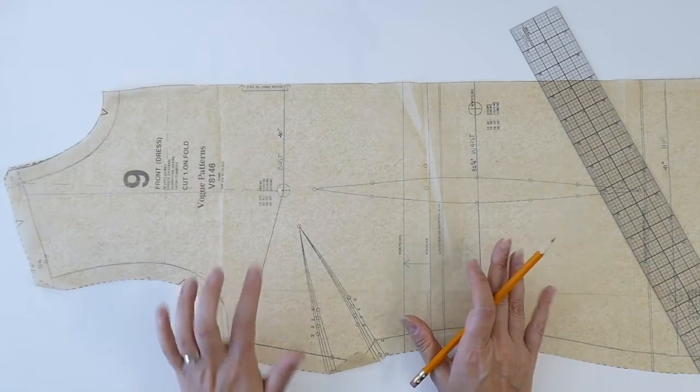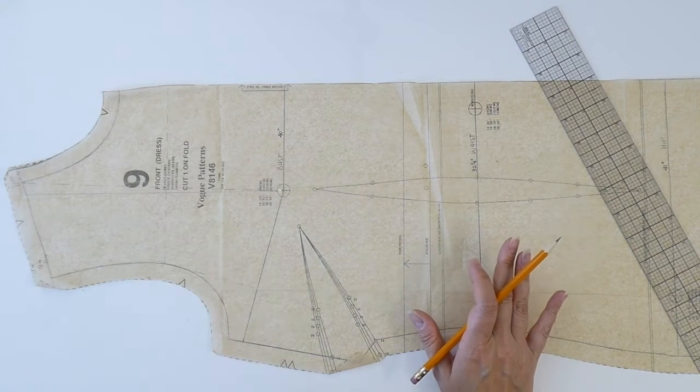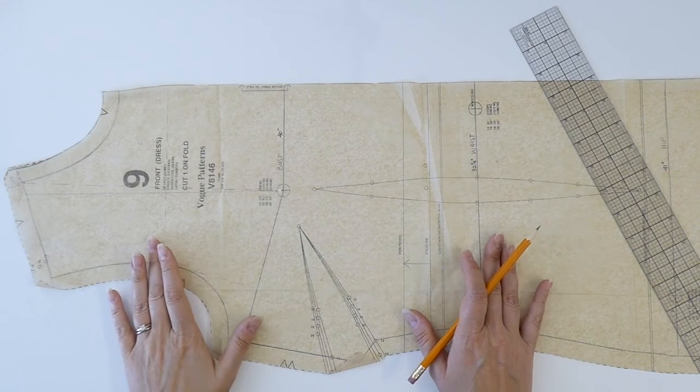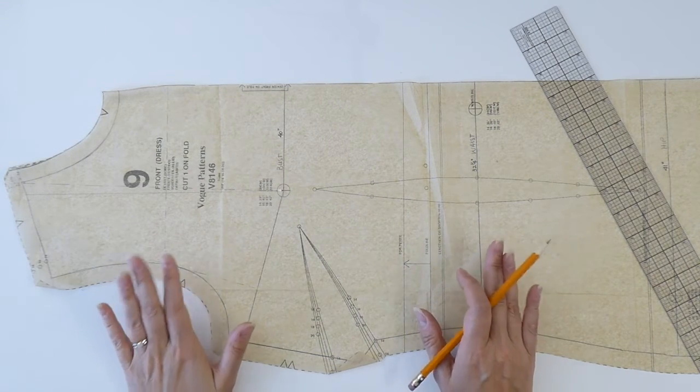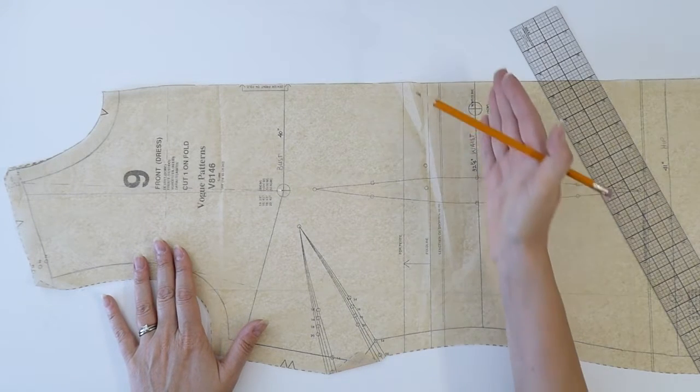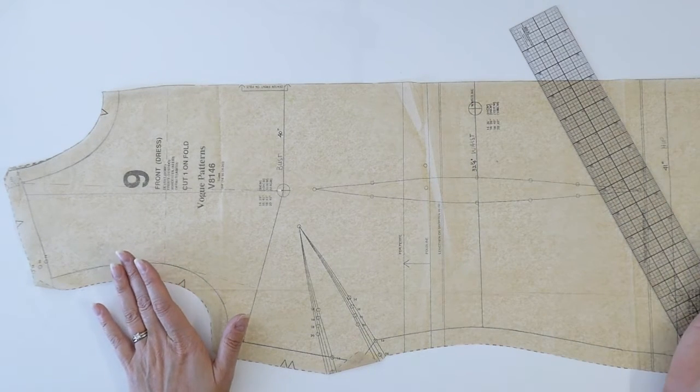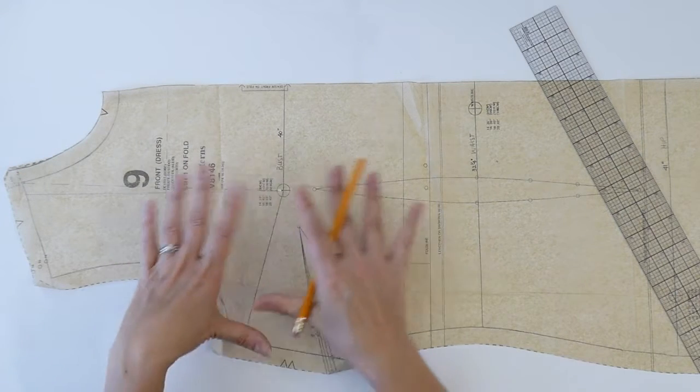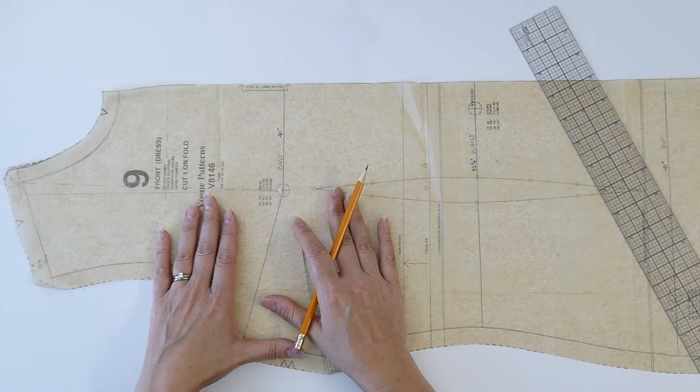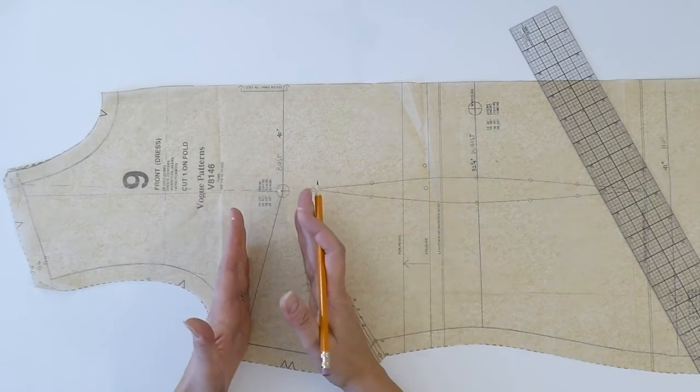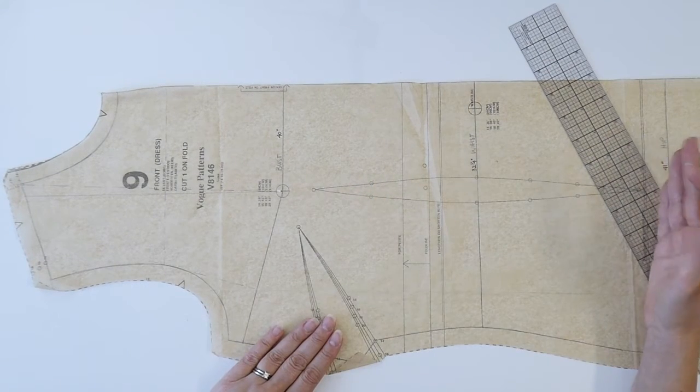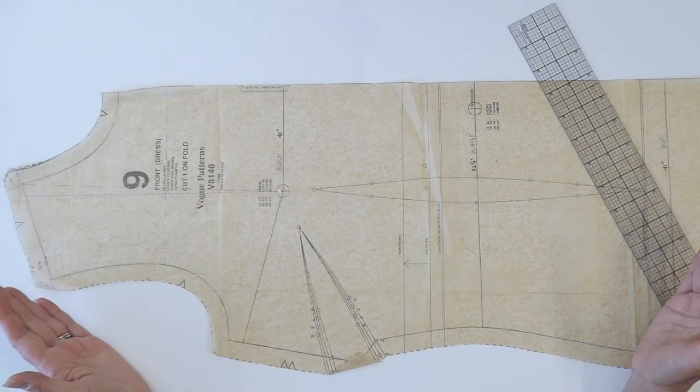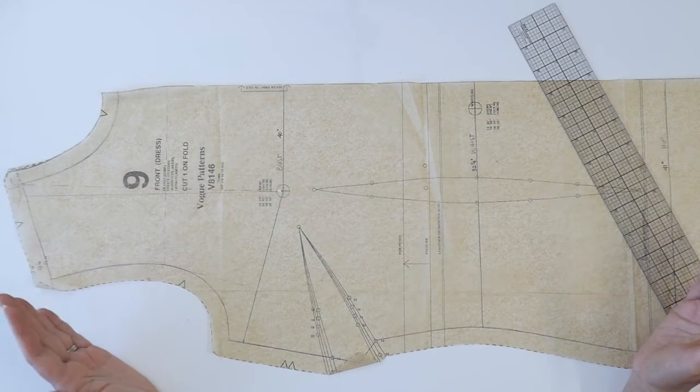Now if you don't know where your bust line is, it's kind of just really confusing, then don't worry about it. Don't draw it in. You might have a waistline and a hip line position, then just draw those in. Sometimes the bust line area can be really confusing to draw your balance line in. So you can alternatively ignore it and just put the other ones in. You'll still have some sort of guide as to how to balance your garment.